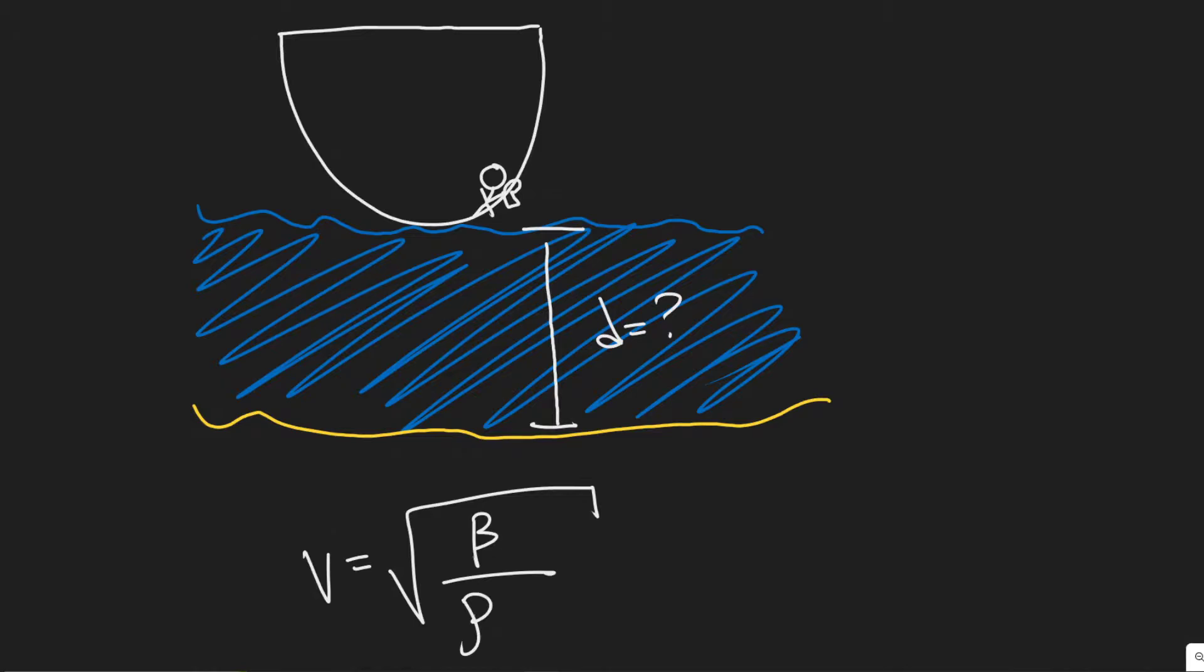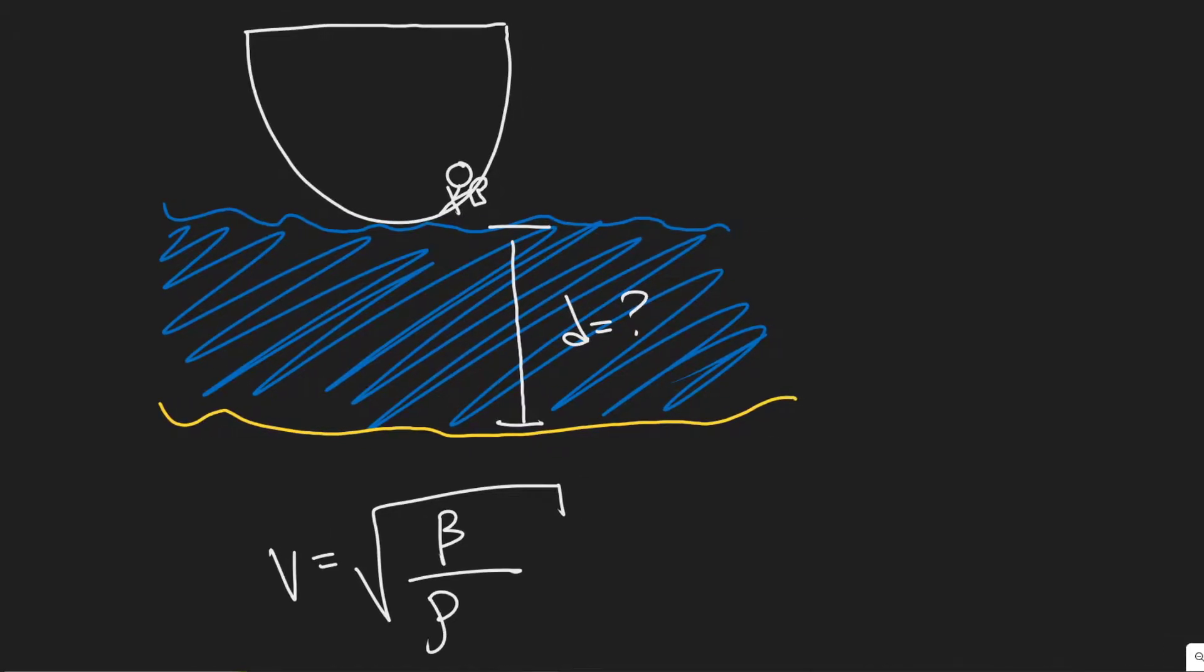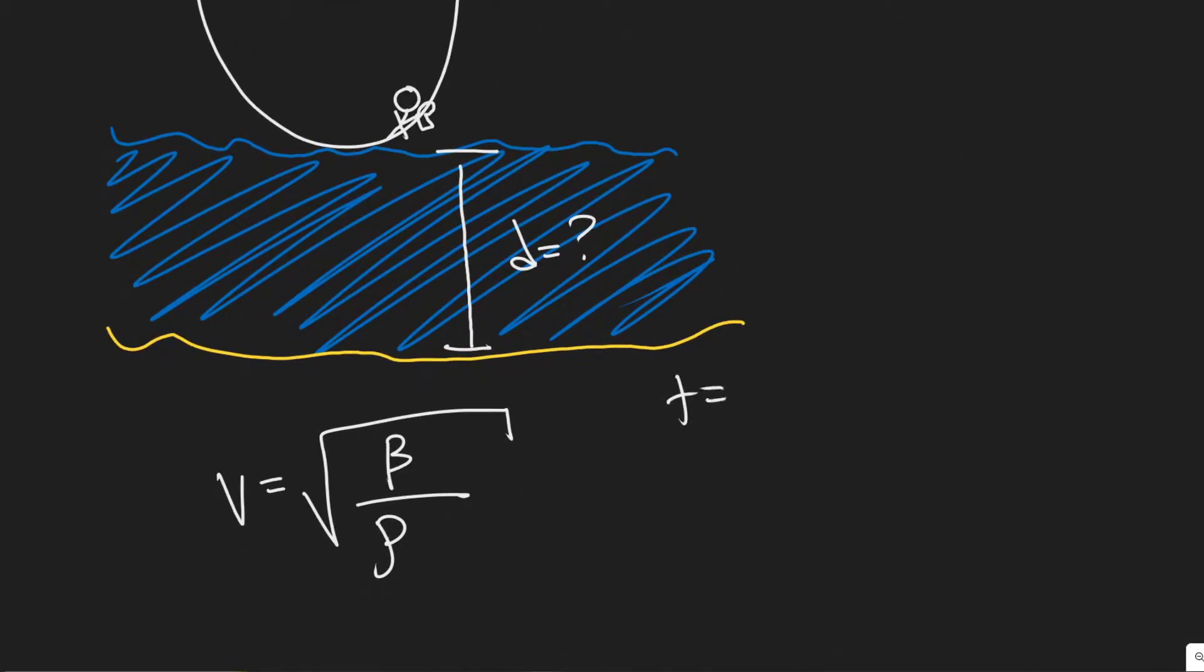We know the amount of time this takes from the strike to when he hears the echo is 2.8 seconds. What we're trying to find is the distance or how deep this is. So this represents how deep it is and we're trying to find the value d.